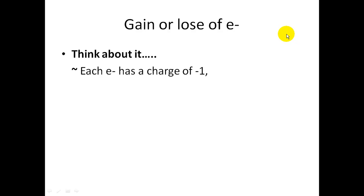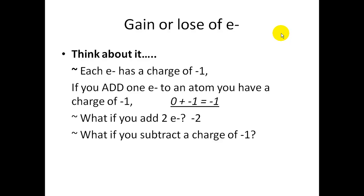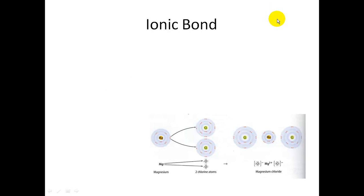Think about it. Each electron has a charge of negative 1. If you add one electron to an atom that was neutral, it would be 0 plus minus 1, which is negative 1. If you add two electrons, it would be minus 2. If you subtract a charge of minus 1, 0 minus minus 1, you do the math, it would be a plus 1. You're taking away the negative charge.